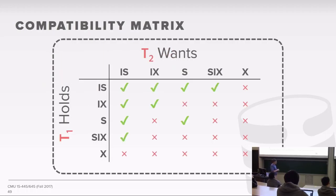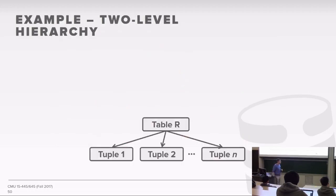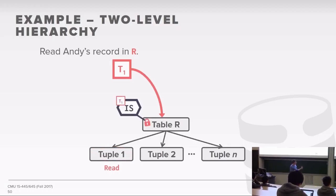An intention lock is at the higher level—it tells you what's going on below without having to traverse down and look at everything below you. Intention shared means down below there'll be a shared lock. Intention exclusive means down below there'll be an exclusive lock. Shared intention exclusive locks the current node in shared mode but hints that down below there are exclusive locks. The compatibility matrix shows intention shared is compatible with almost everything except exclusive locks, and as you go down they become less compatible.